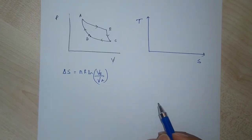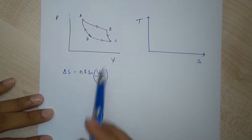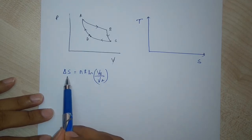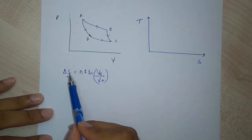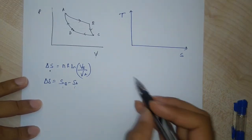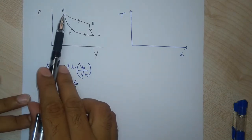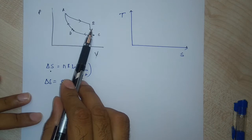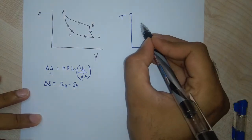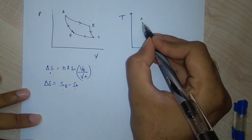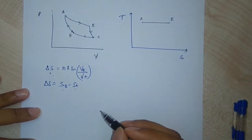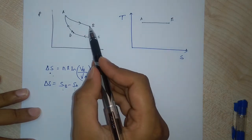For isothermal expansion, the change in entropy equals nR ln(VB/VA), which is a positive number. So going from A to B, entropy is increasing. On a TS diagram, since temperature is constant and entropy keeps increasing, A to B plots as a horizontal straight line at temperature T1.